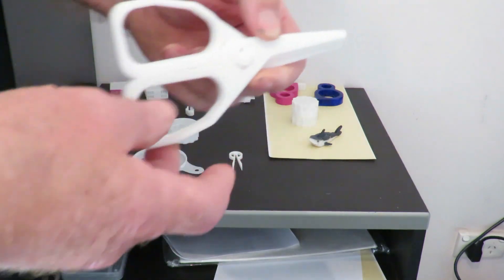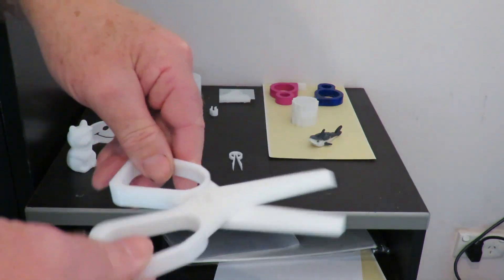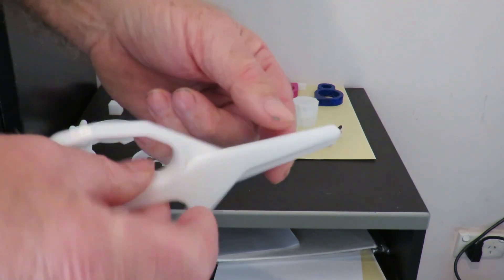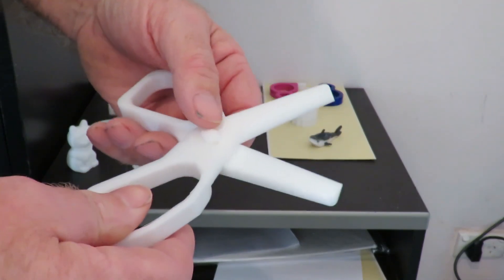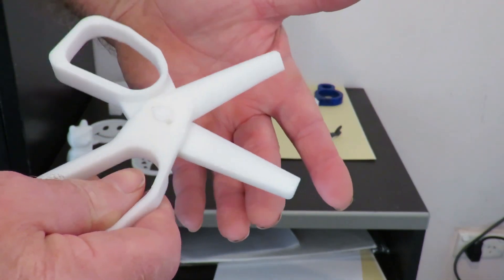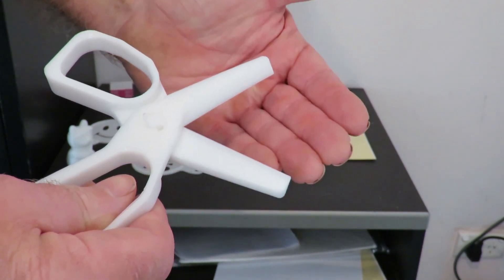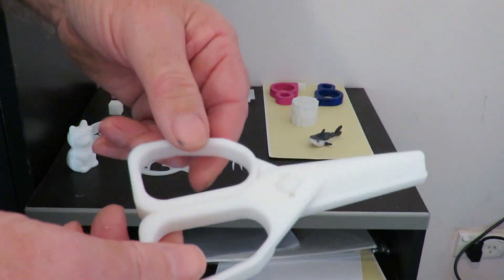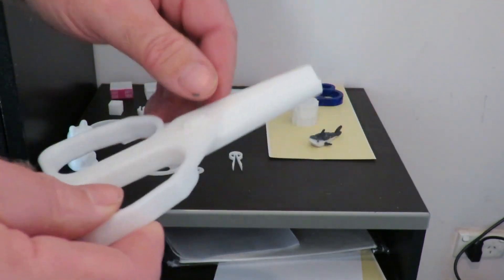I printed out some scissors as well. Little kiddies ones. I don't know whether I bother doing them again. They work but what you've got to do is heat one side of the plastic and twist it in a fraction so it'll cut. I printed them out for one of my little grandchildren but I'm not certain about that.